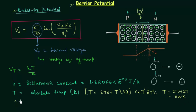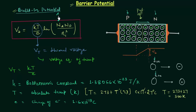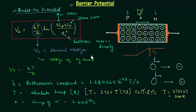Small e is the charge of one electron, equal to 1.6 × 10⁻¹⁹ Coulombs. That covers all the terms in the thermal voltage formula. Inside the bracket of the barrier potential formula, N_a is the acceptor concentration, N_d is the donor concentration, and N_i is the intrinsic carrier density. With all these values we can easily calculate V_B.